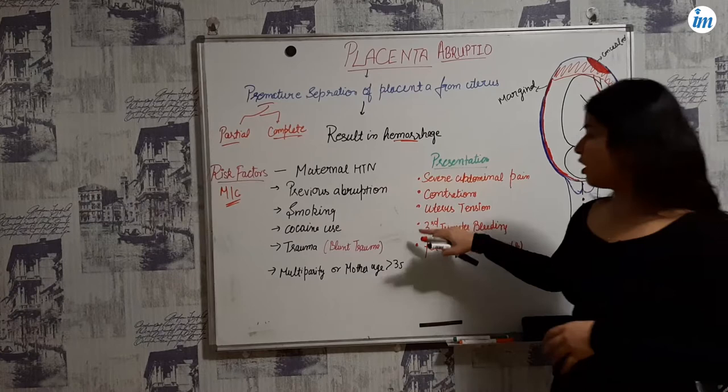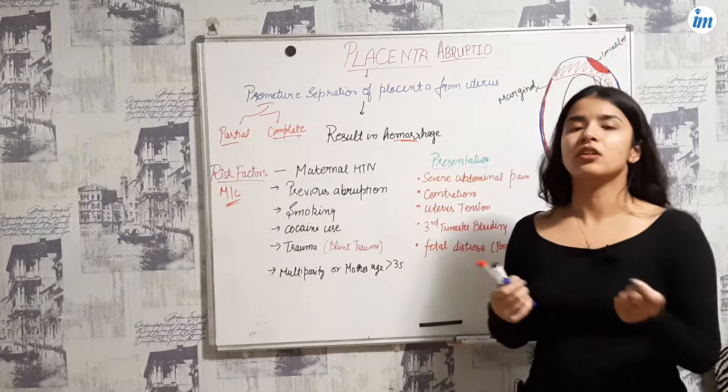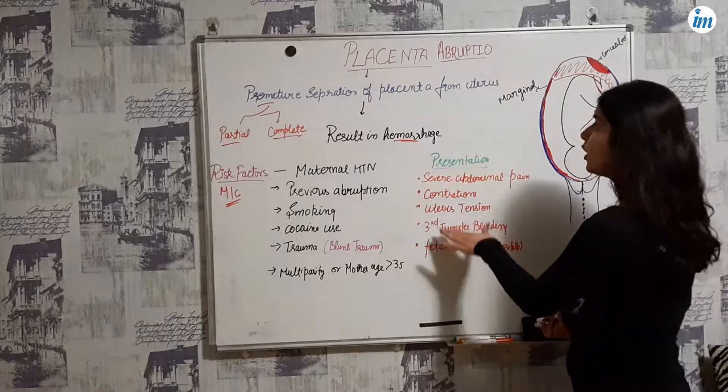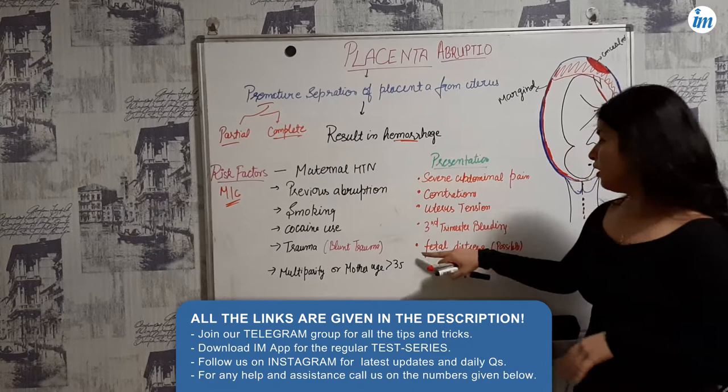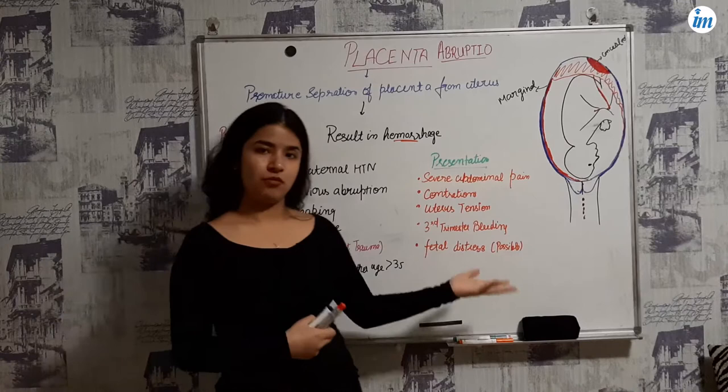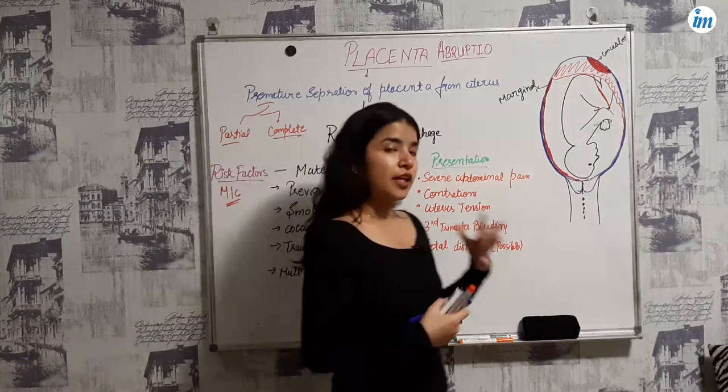Another presentation can be third trimester bleeding. One of the important causes of third trimester bleeding is placenta abruptio — there are other reasons also such as placenta previa. It is also one of the reasons for third trimester bleeding, and fetal distress can also be present, so you can suspect that the baby is having distress syndrome.